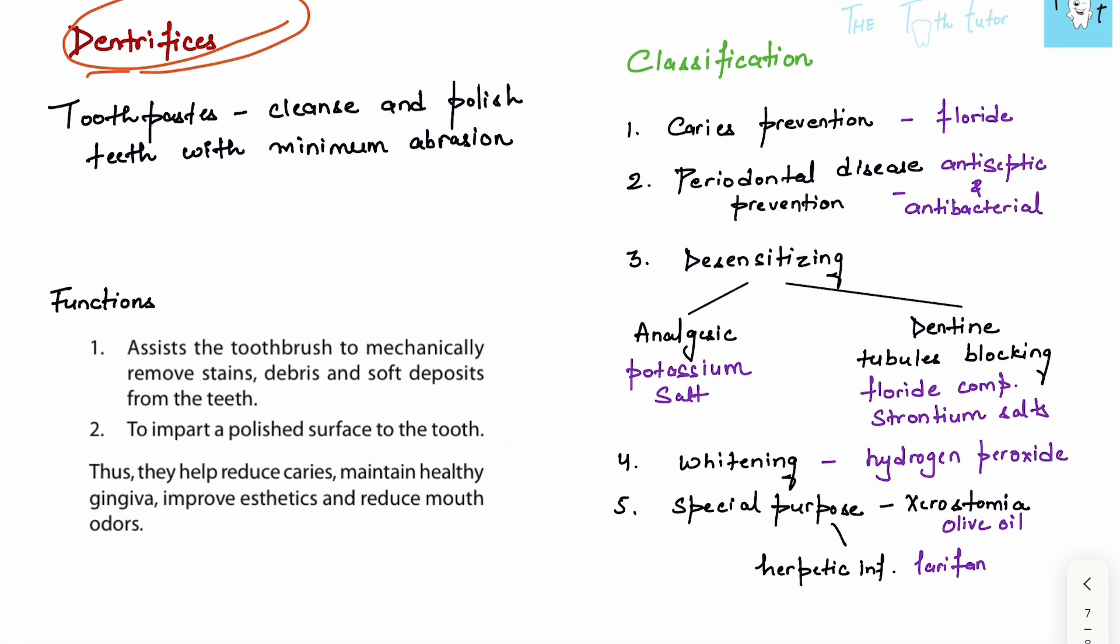Then we have dentifrices - these are toothpastes. What's the function of toothpaste? It has to clean the surface and polish it with minimum abrasion. You have to be careful not to use it where dentin or cementum is exposed because dentin and cementum abrade much faster than enamel. Its function is to assist the toothbrush to mechanically remove stains, debris, and soft deposits and impart a polished surface. Therefore, they remove caries, maintain healthy gingiva, improve aesthetics, and reduce mouth odor.